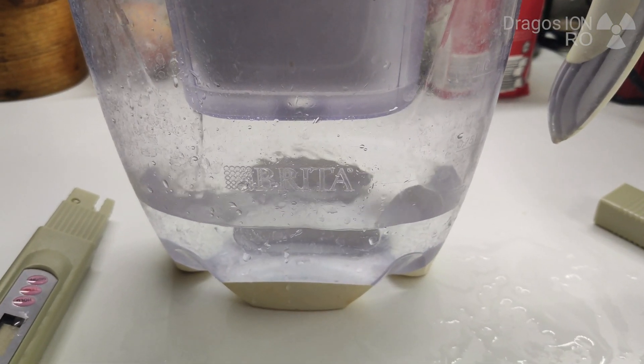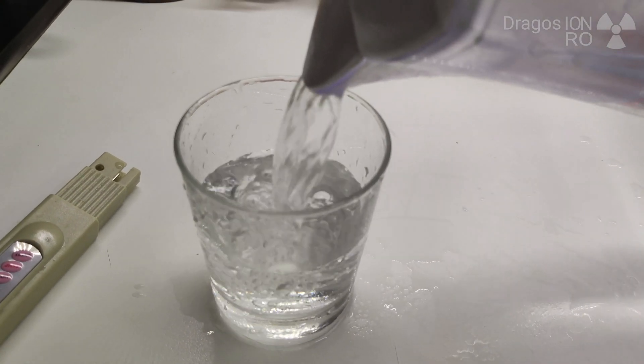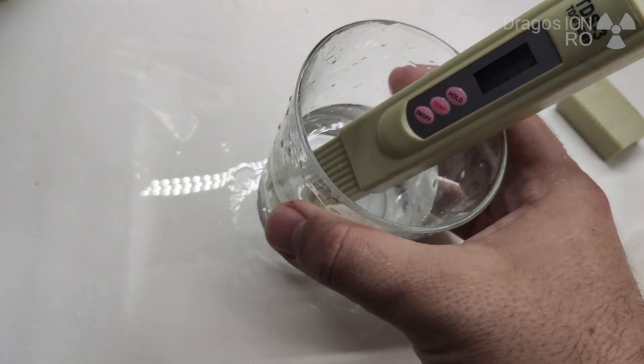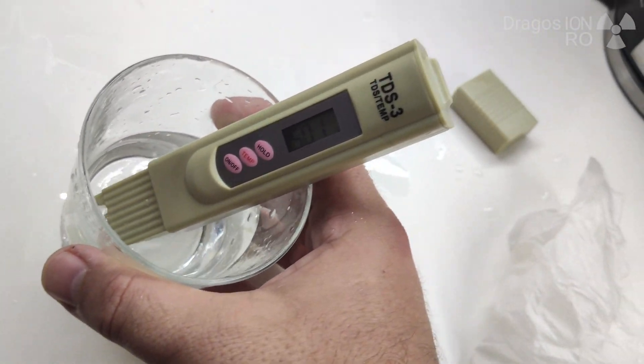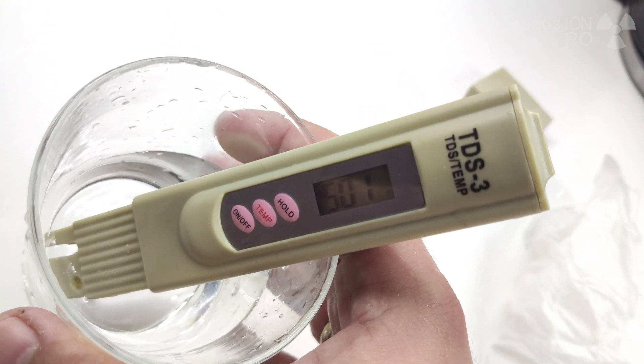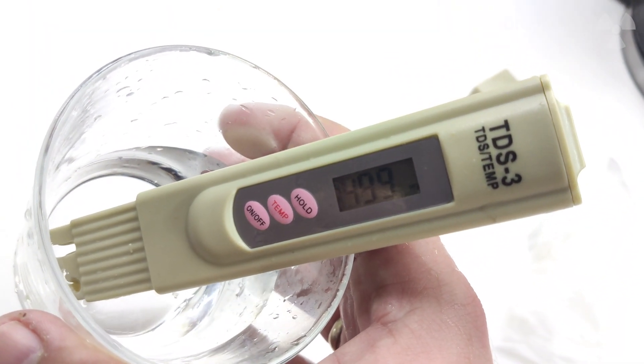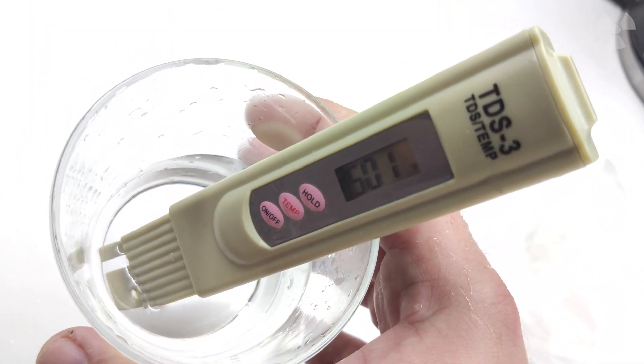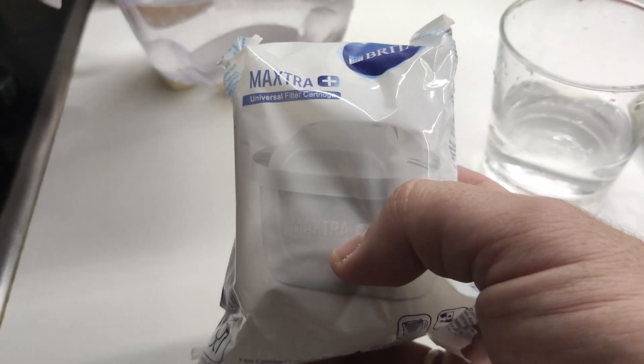So I'm going to try the water filter. I have this Brita water filter, and the cartridge hasn't been changed in a while, maybe a few months. Normally you change it, I think every month, I'm not sure. Write in the comments how you change your Brita filters and if they work. The cartridge was the same, it was also 500.